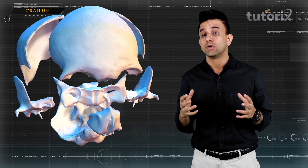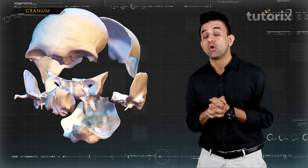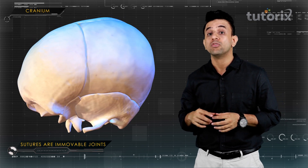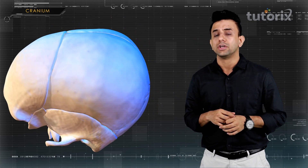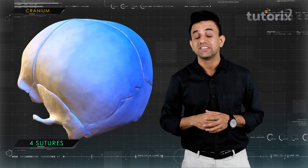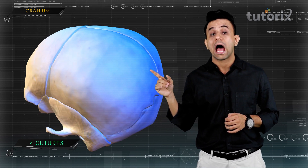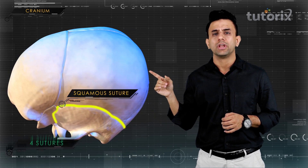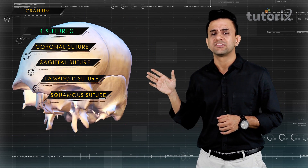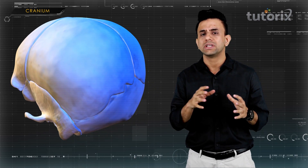The bones of the cranium are attached to each other by sutures, which are immovable joints. The human skull has about four sutures in the cranium: the coronal suture, the sagittal suture, the lambdoid suture, and the squamous suture.